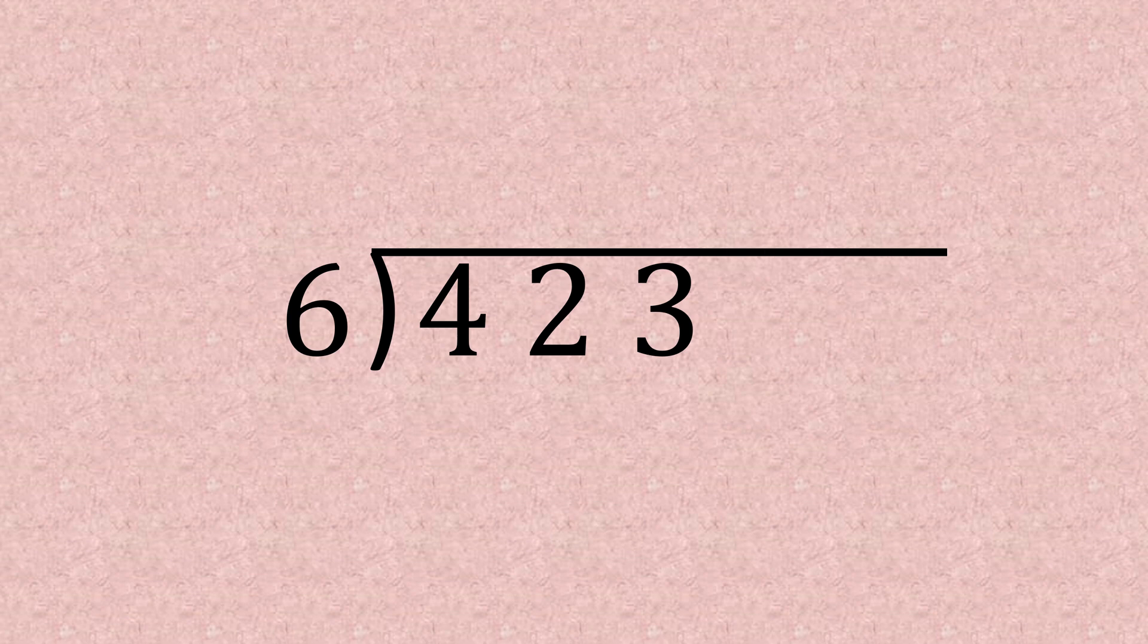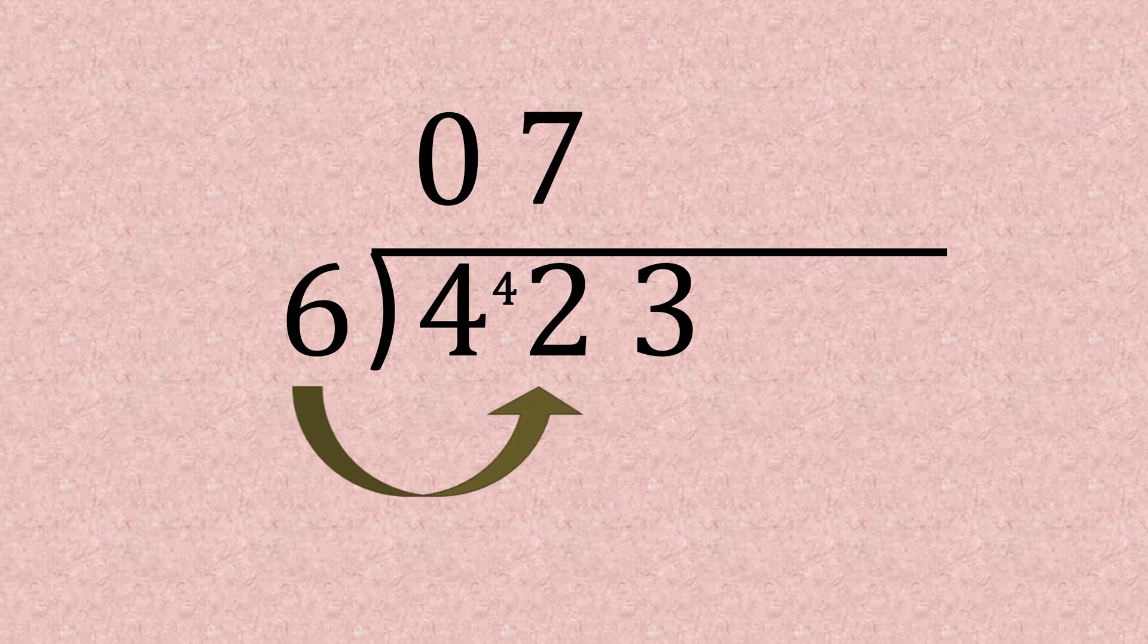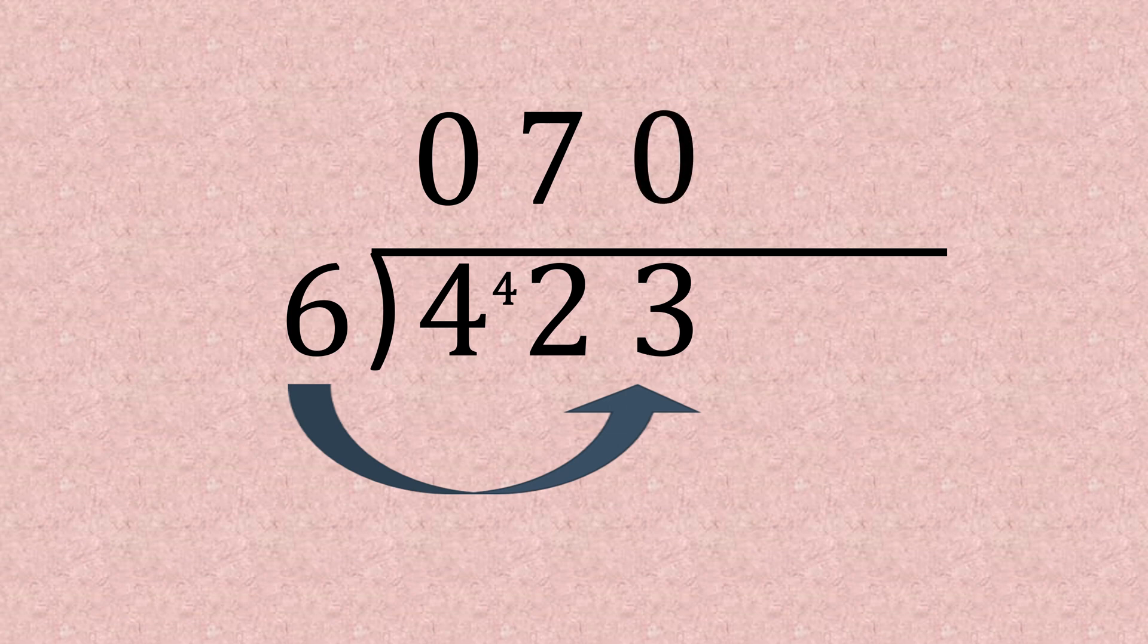Here we have 423 divided by six, let's pop on the bus shelter. So six into four, we know that doesn't go, so we add a zero, carry the four. Six into 42, that goes a lovely exact seven times with no remainders. So what we need to do here is six into three goes zero times.